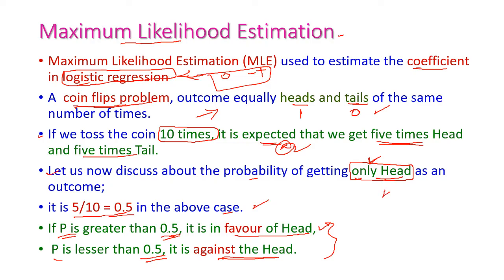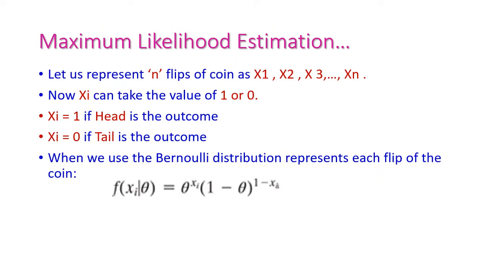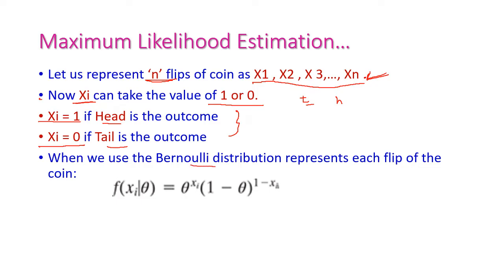Suppose if we flip n times of this coin, then the x values equal to x1, x2, etc., up to xn — that is, n times we are going to toss our coin. Now, xi can take any value 0 or 1: 0 means tail and 1 means head. If xi equals 1, that is head is the outcome; xi equals 0, then tail is the outcome. We use the Bernoulli distribution, which represents each flip of the coin. That is, f of xi given theta, which is equal to theta to the power xi into 1 minus theta whole power 1 minus xi.